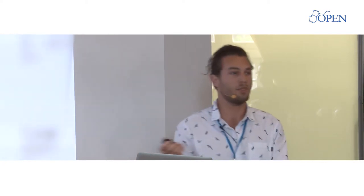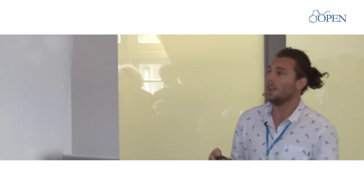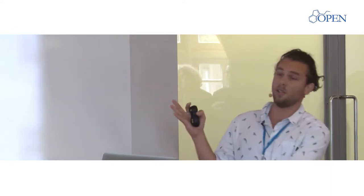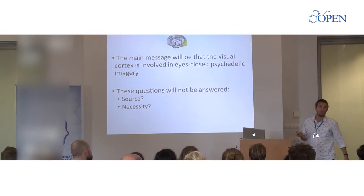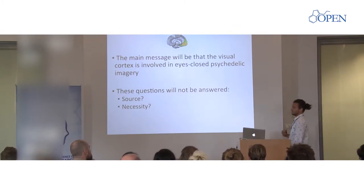I'm not going to say that the primary visual cortex and visual areas are the source of the visual imagery. I'm not going to say if it's a top-down or bottom-up process, or if it's the subconscious or some information from outside. I'm just going to say that it's involved in the eyes-closed imagery, and I'm not going to say if it's necessary for this activity to be there in order to experience this subjective state.